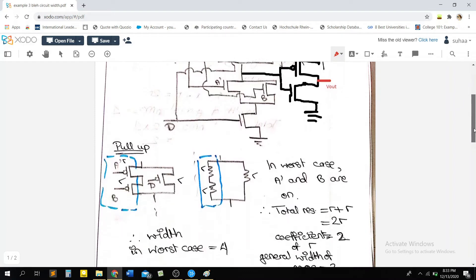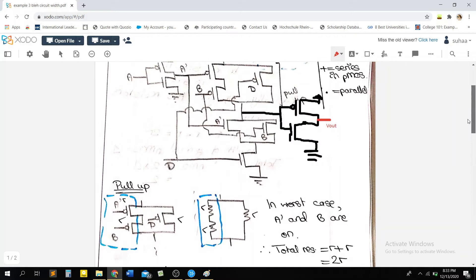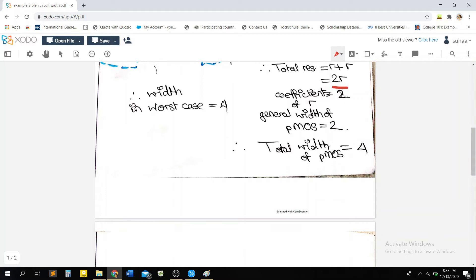So let's start with the pull-up part. We're going to be calculating the worst case width. And the pull-up part consists of basically these three PMOS. And these two are in series and this one is in parallel. So obviously if these two series connections are on and this one is off, then we will get our maximum resistance. So R plus R will give us a maximum resistance of 2R. And as per our previous formula, the coefficient of R is 2. The general width of a PMOS is 2. And multiplying will give us the worst case width of 4.